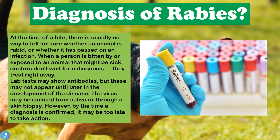At the time of the bite, there's usually no way to tell for sure whether an animal is rabid or whether it has passed on an infection. When a person is bitten or exposed to an animal that might be sick, doctors don't wait for a diagnosis — they start treatment right away. Lab tests may show antibodies, but these may not appear until later in the development of the disease. There is no specific early test to completely confirm that an individual is rabies positive, so treatment is started as soon as possible based on the assumption that the patient is rabies positive.